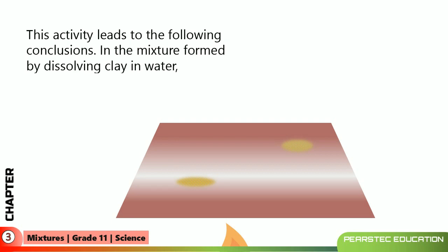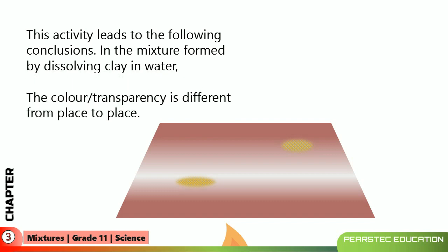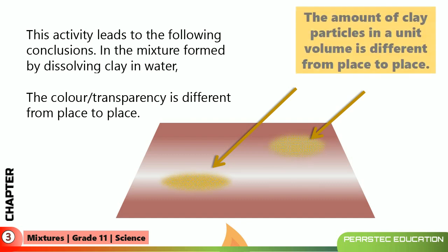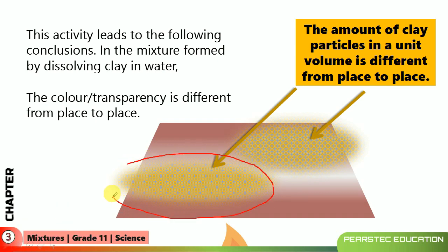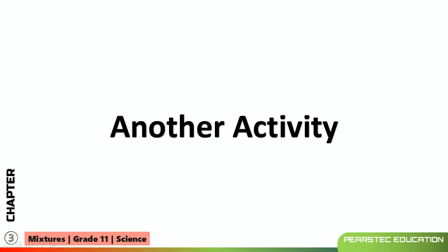This activity leads to the following conclusion: in the mixture formed by dissolving clay in water, the color transparency is different from place to place. The amount of clay particles in a unit volume is different from place to place. When you put two drops from A and B, if you look very closely, the particles are different — not similar from one place to another.